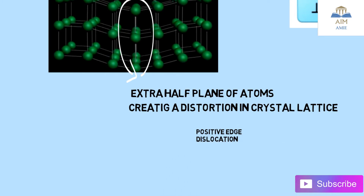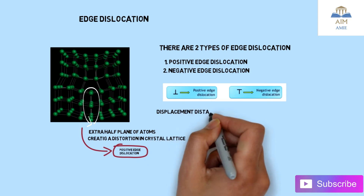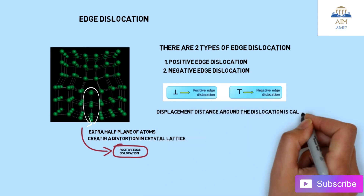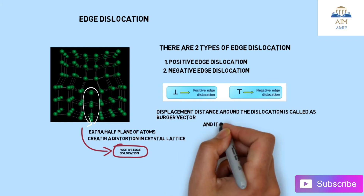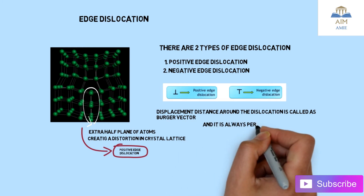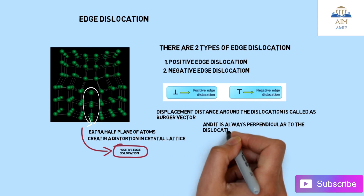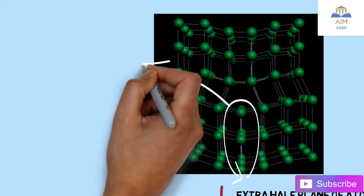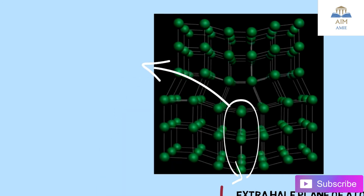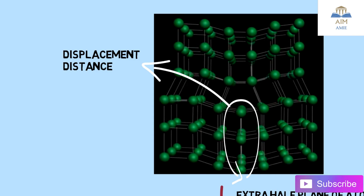As you can see in this image, this is the positive edge dislocation. The displacement distance around the dislocation is known as the Burgers vector, and it is always perpendicular to the dislocation line. In this image, this line represents the dislocation line, which is the displacement distance.